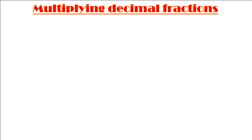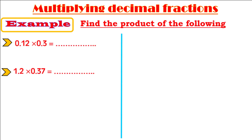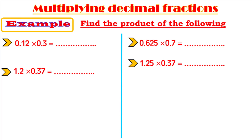Multiplying decimal fractions. Example: find the product of 0.12 times 0.3, and 0.625 times 0.7. We studied multiplying decimals by an integral number — do you remember the steps? Step 1: ignore the decimal point and multiply as whole numbers. Step 2: insert the decimal point after finding the product, according to the total decimal places in the factors. Today we apply the same steps but with two decimals — you have to count decimal places from both.